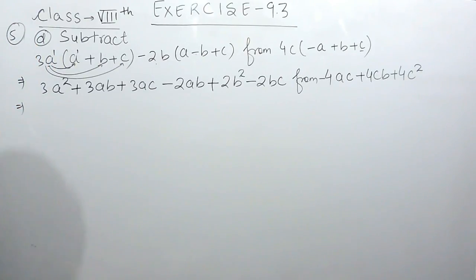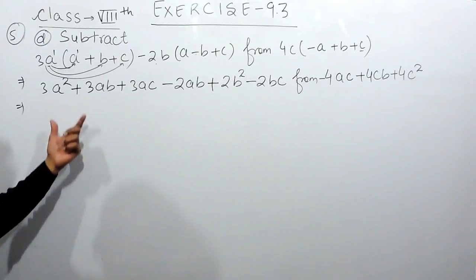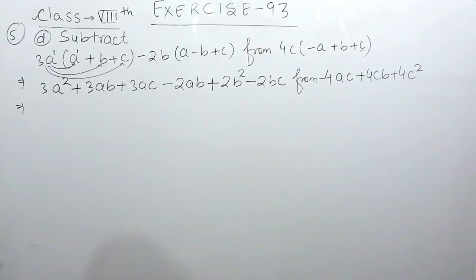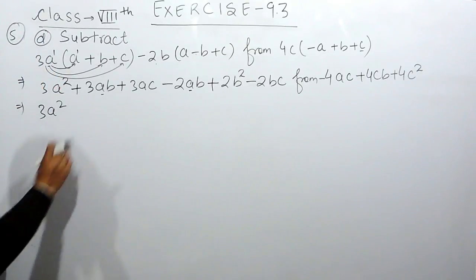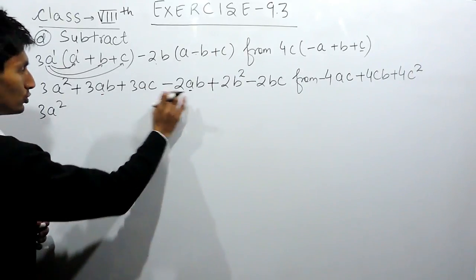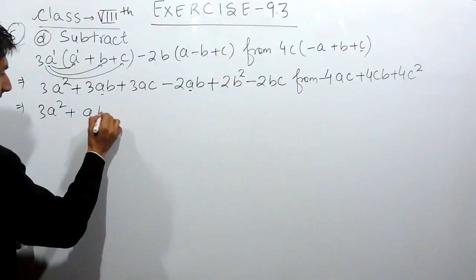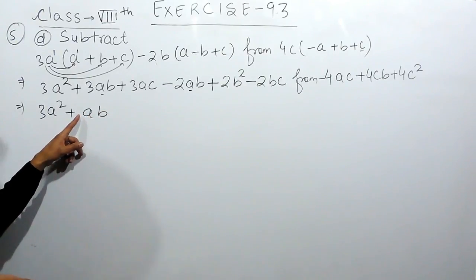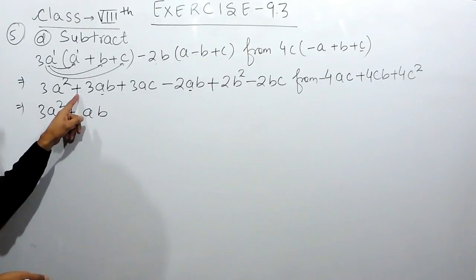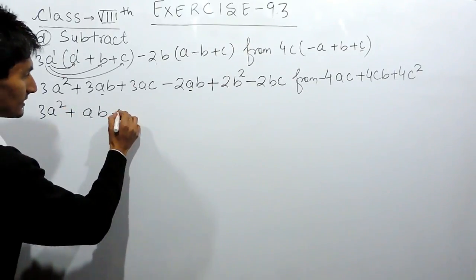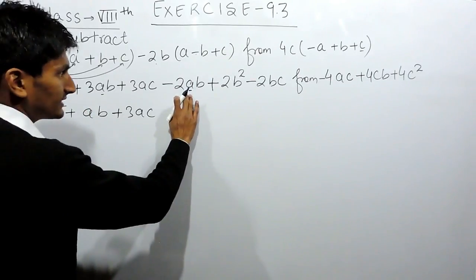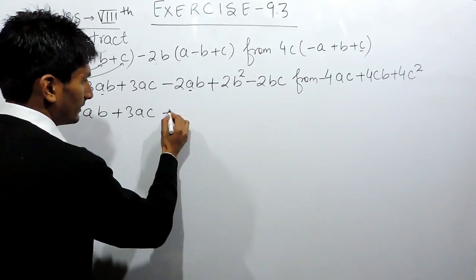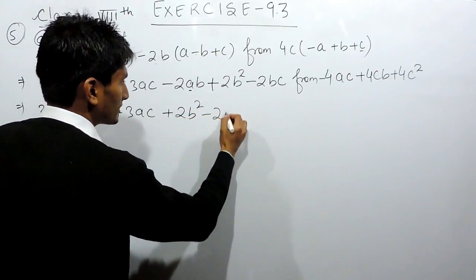Now, before subtraction, let's check whether there are like terms so that we can solve them further. So 3a square will remain as it is because there is no like term to this. But 3ab and this ab are like terms, so these can be solved. Plus minus is minus, 3 minus 2 is 1, so this will give 1ab — there is no need to write 1 because it is considered as 1. The sign will be positive because the greater value has positive sign. This 3ac will remain as it is because there are no like terms to this.